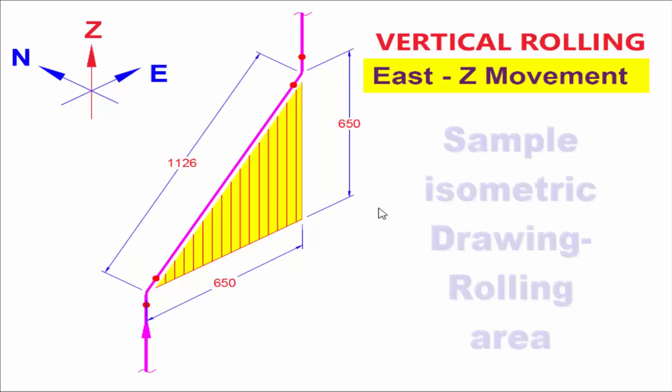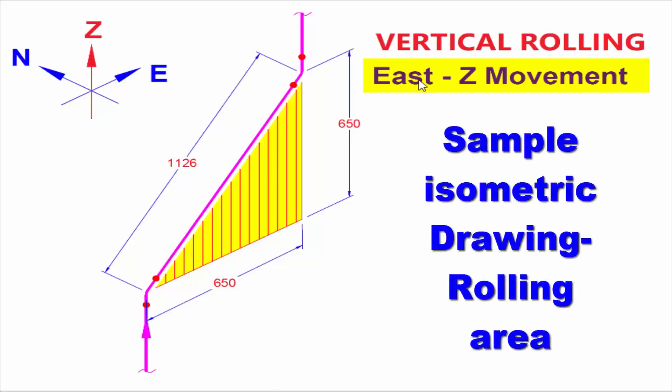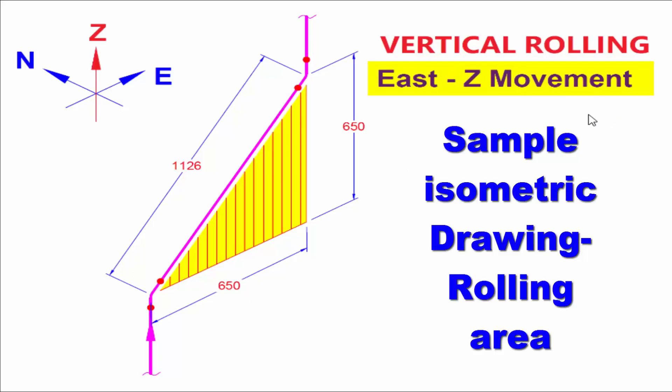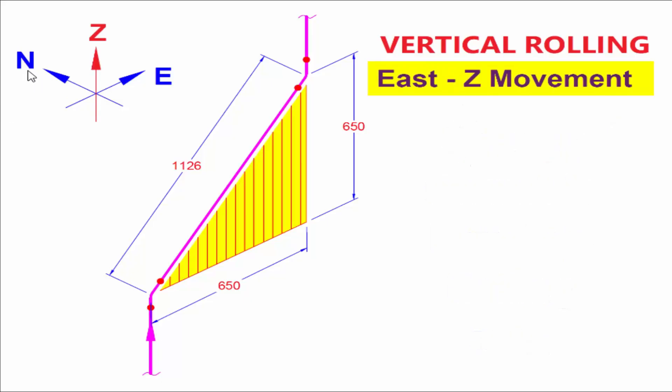This is one of the vertical rolling examples. Z means that elevation moment plus or minus like this. Here north, opposite side south, and east west. This is mentioned in all isometric drawing. And vertical position we called as Z.